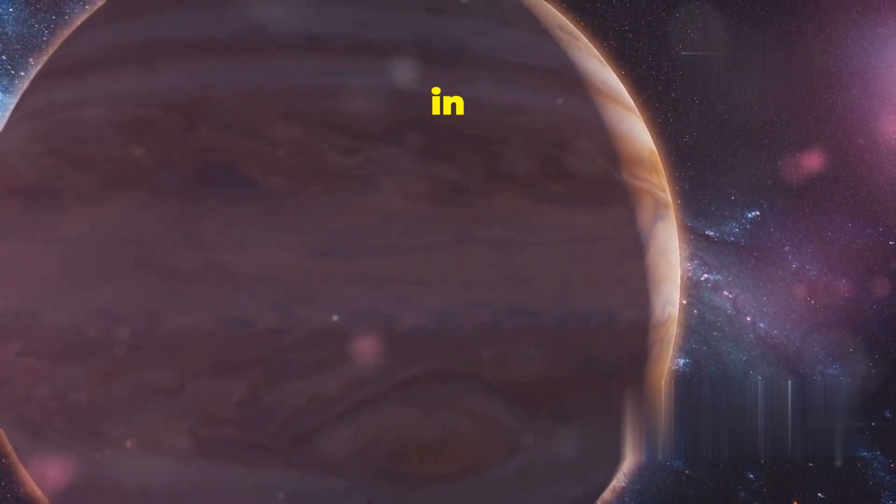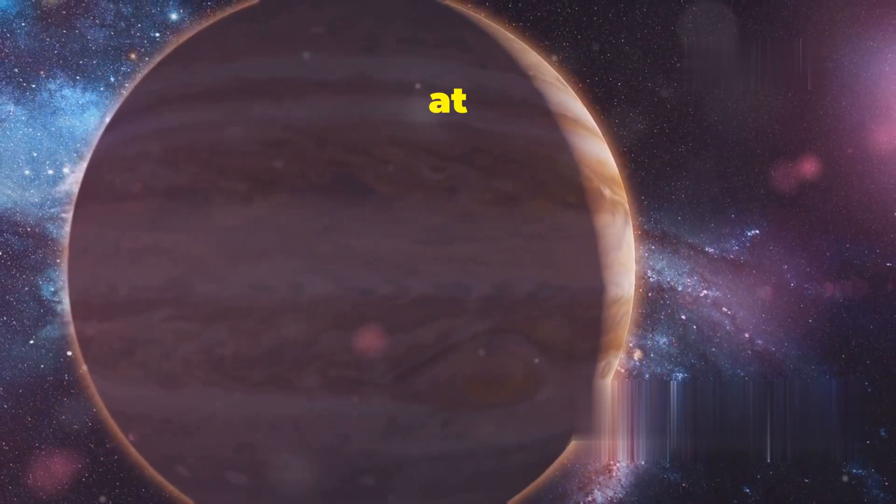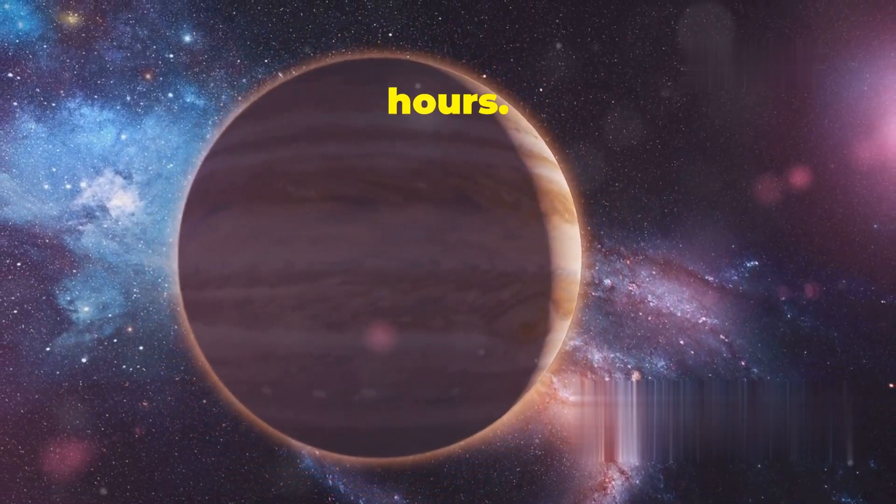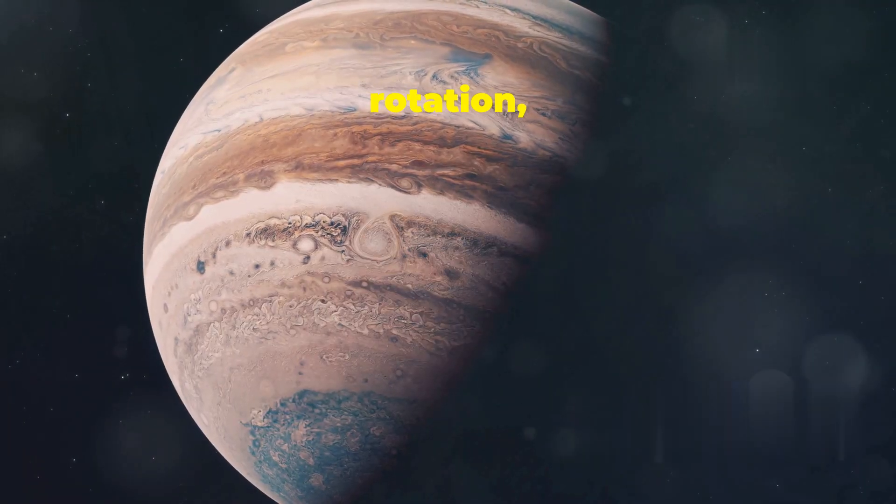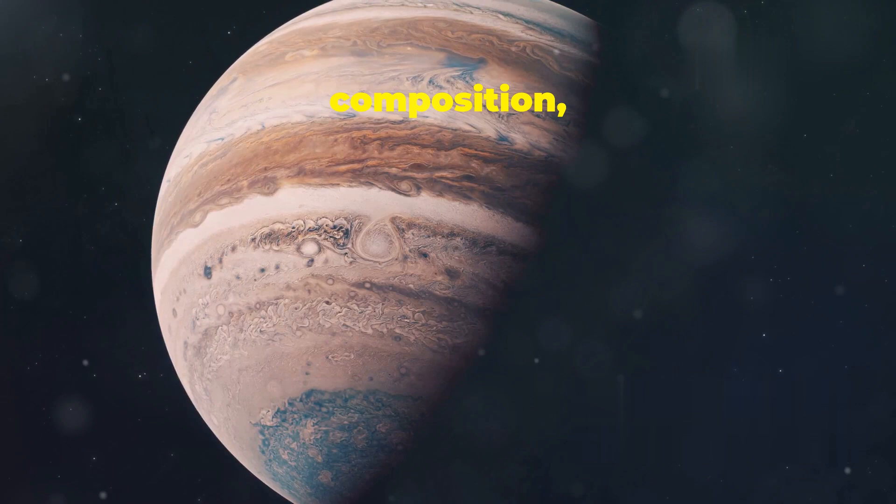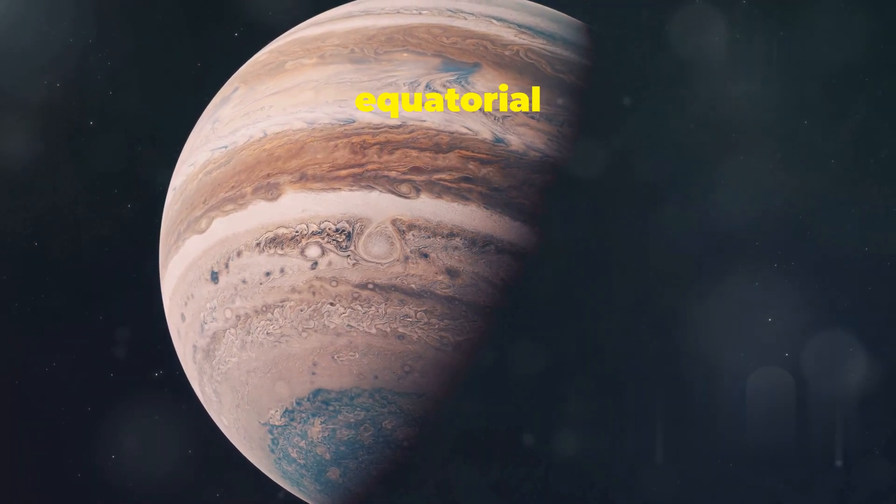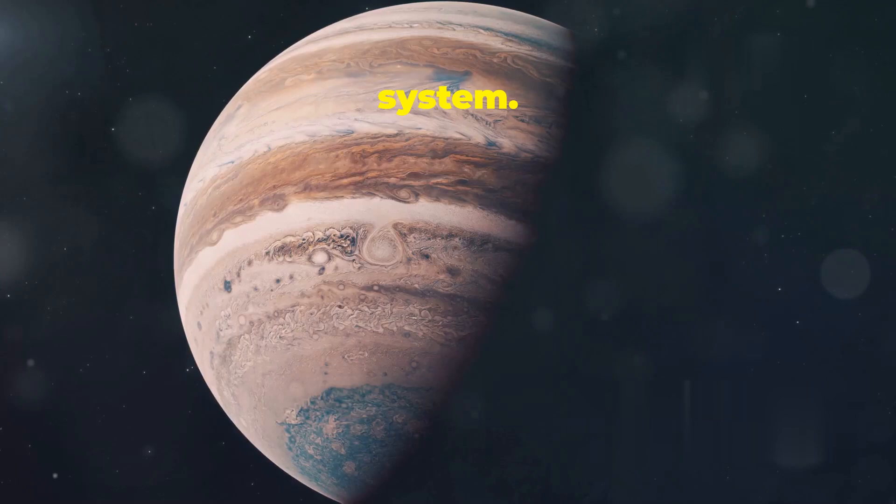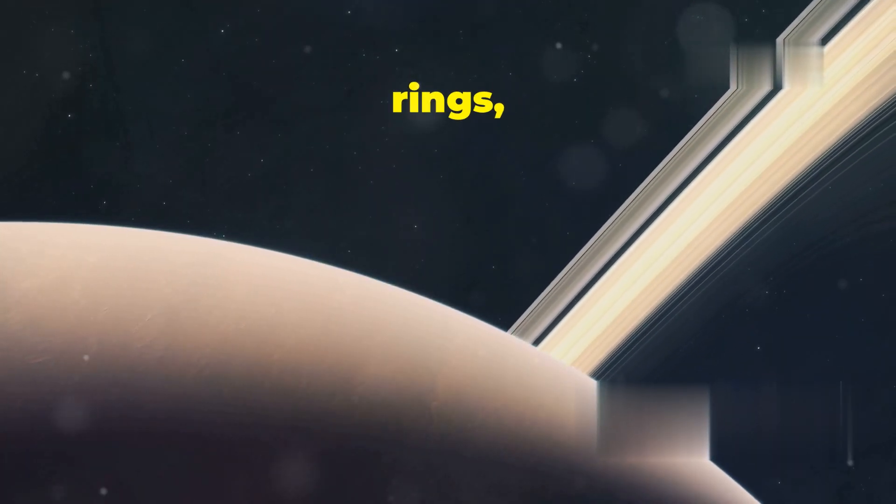Jupiter, the largest planet in our solar system, spins at an astounding speed, completing a rotation in just under 10 hours. This rapid rotation combined with its gaseous composition results in a pronounced equatorial bulge, making Jupiter the most oblate planet in our solar system. Saturn, with its majestic rings, also exhibits significant oblateness due to its rapid rotation and low density.